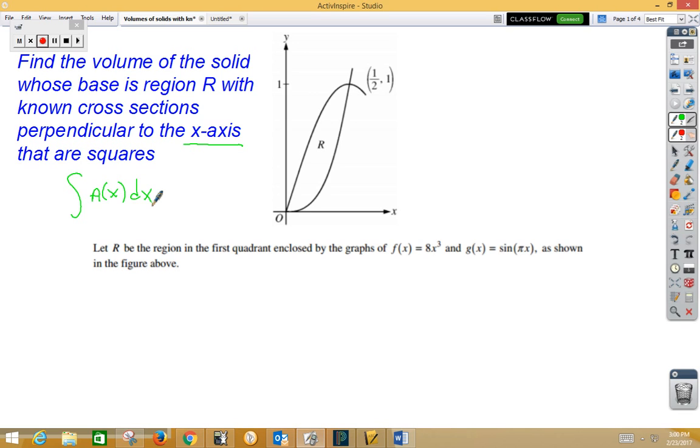In this case, our known cross-sections are squares. The formula for the area of a square is side squared. So if we imagine a square coming out at us, we would have a side length and a square coming out at us.